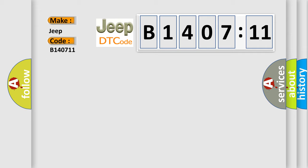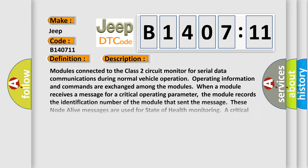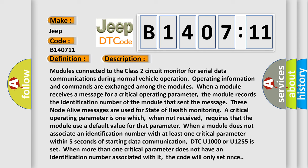The basic definition is Class 2 communication malfunction. And now this is a short description of this DTC code. Modules connected to the Class 2 circuit monitor for serial data communications during normal vehicle operation. Operating information and commands are exchanged among the modules. When a module receives a message for a critical operating parameter, the module records the identification number of the module that sent the message.